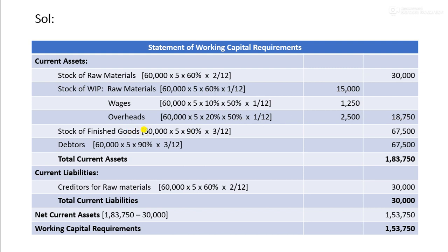For finished goods, all cost components — raw materials, wages, and overheads — are fully complete.